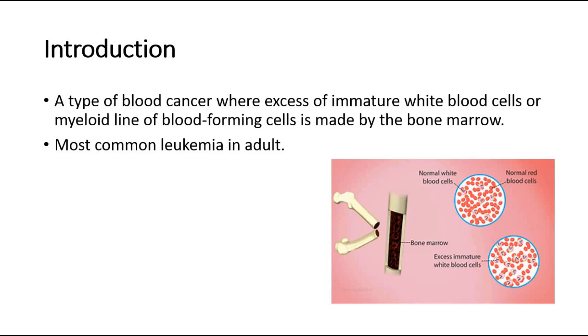This picture over here shows two circles: the first is a normal white blood cells and red blood cells, whereas the second circle shows excessive, immature white blood cells.